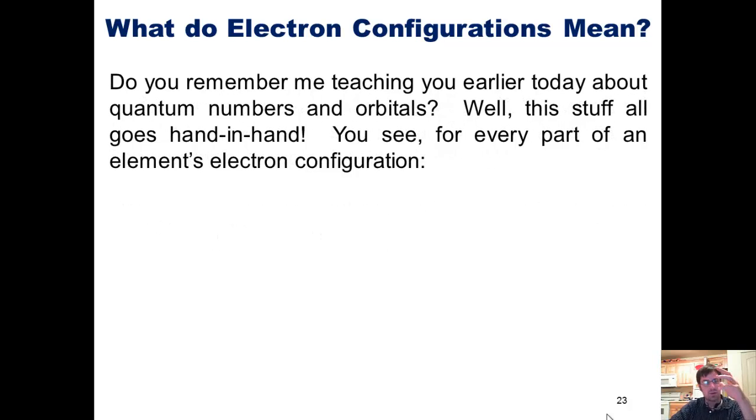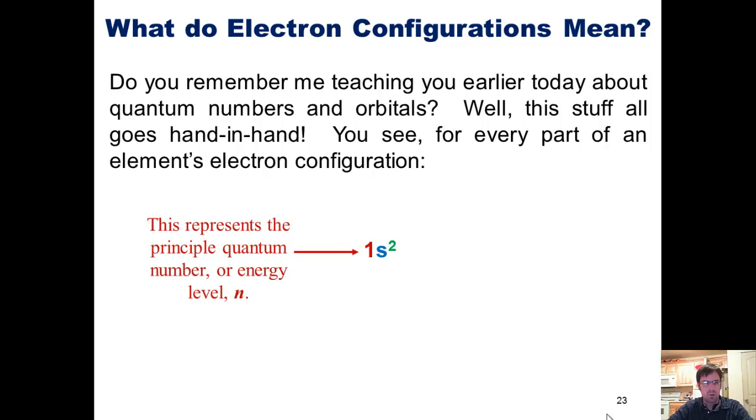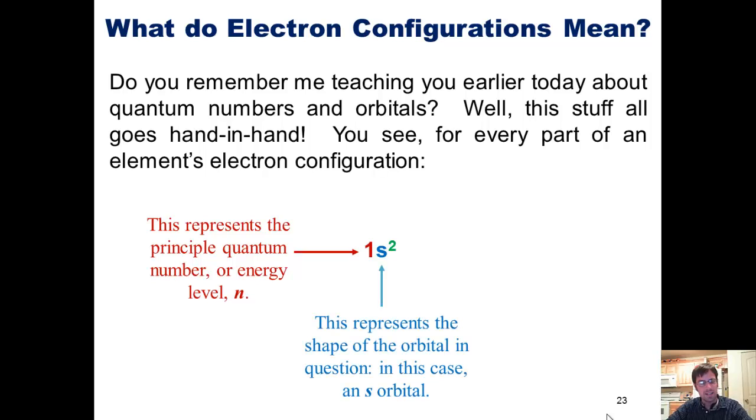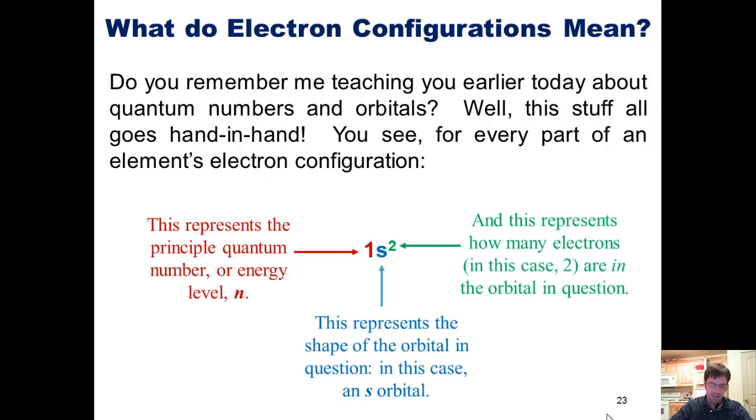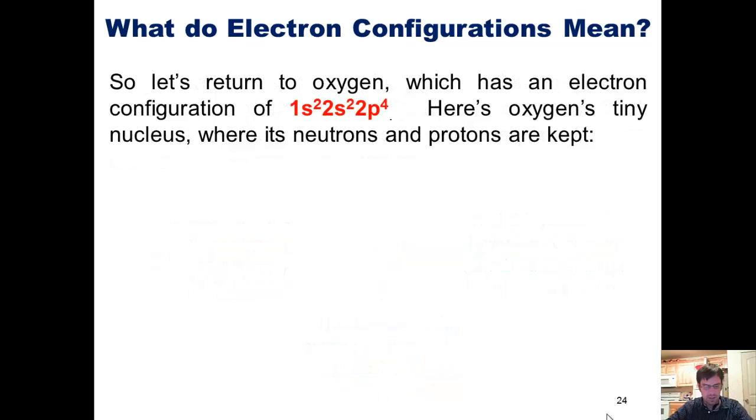Do you remember me teaching you earlier in our previous presentation about quantum numbers and orbitals? Well, this stuff all goes hand in hand. You see, for every part of an element's electron configuration, this number represents the principal quantum number, or energy level, n. This letter represents the shape of the orbital in question, in this case, an s orbital. And this number represents how many electrons, in this case two, are occupying the orbital in question. So let's return to oxygen, which has an electron configuration of 1s2, 2s2, 2p4.